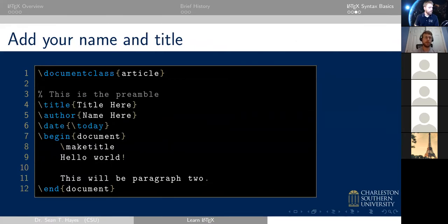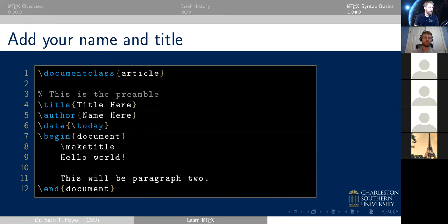Here's a little more you can do: there are special commands for the title, the author, and the date. There's even a command for today's date that updates every time you compile. Inside the 'begin document', you add 'make title' and it outputs the preamble information in a nicely formatted way. That's the basic basics. Now here are some resources we'll leverage regularly.